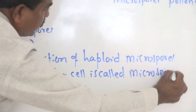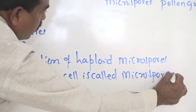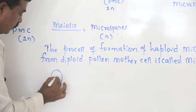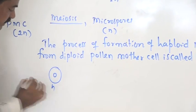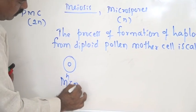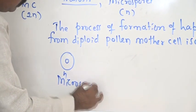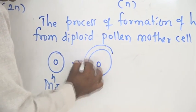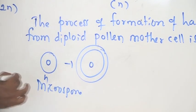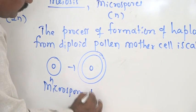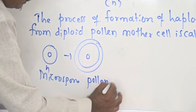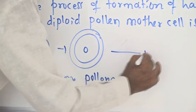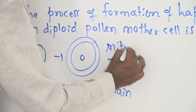Once again, consider a single microspore. When this microspore develops an exine and intine as two coverings, it becomes a pollen grain. This pollen grain is the first stage of the male gametophyte. This pollen grain then undergoes mitosis.